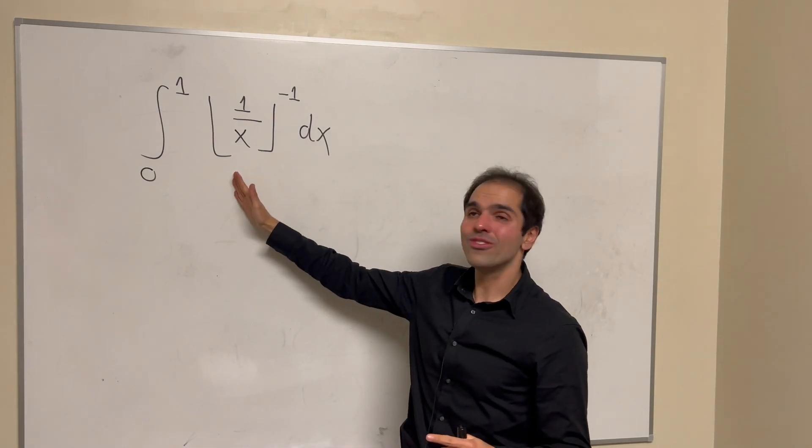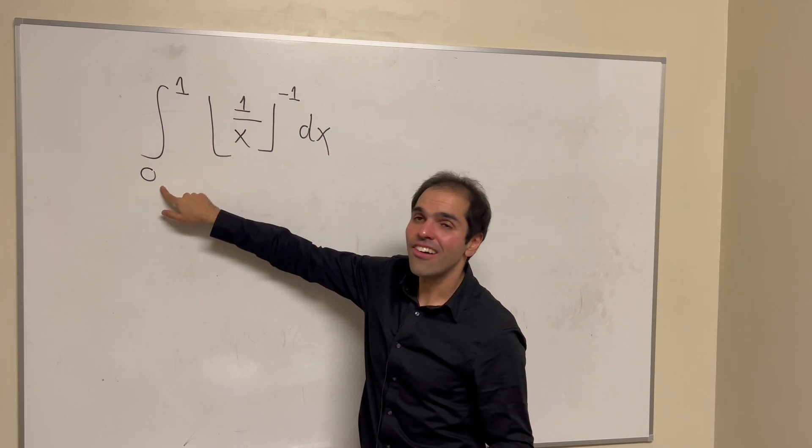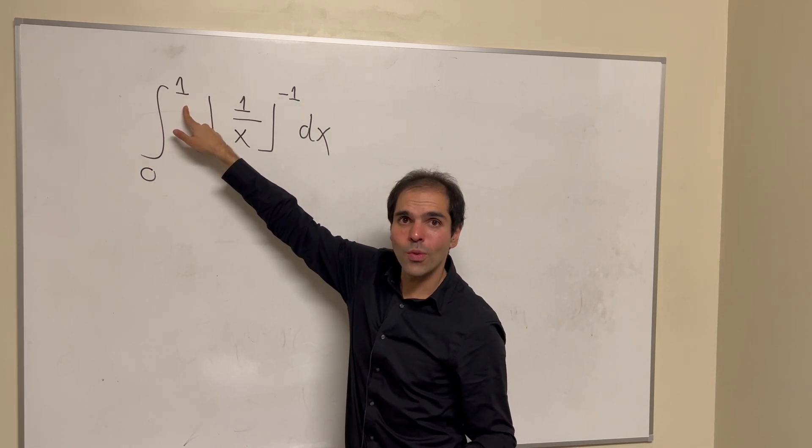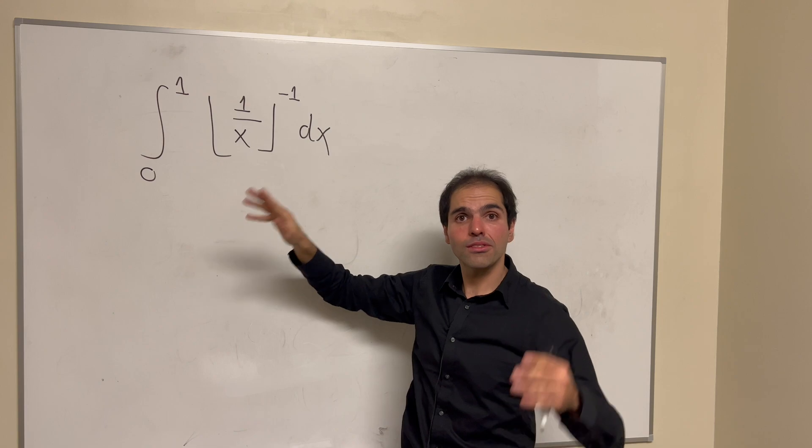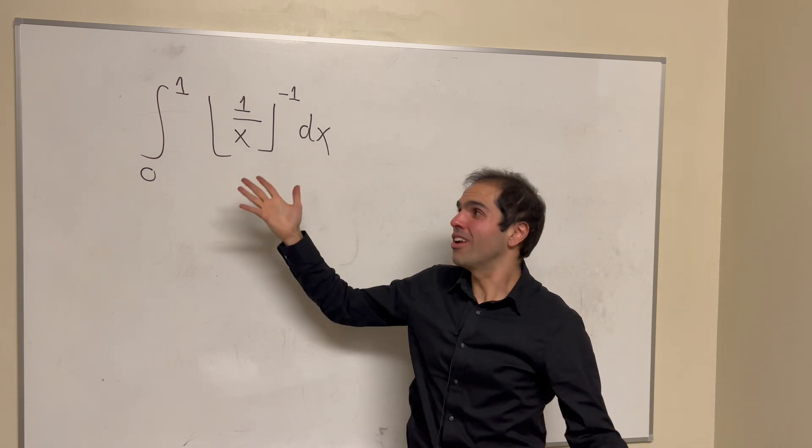Thanks for watching, and here's a really cool integral I found on Twitter. Namely, let's calculate the integral from 0 to 1 of 1 over x. You take the integer part of this and you take 1 over that.